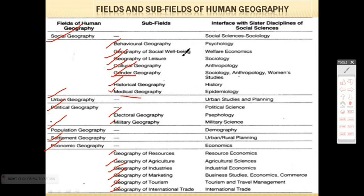Let me briefly explain a few: Gender Geography deals with gender, that is male and female. Medical Geography also exists as a field. Geography of Tourism and Geography of International Trade are also important sub-fields. Electoral Geography is related to voting and its geographic aspects. And we also have Military Geography.